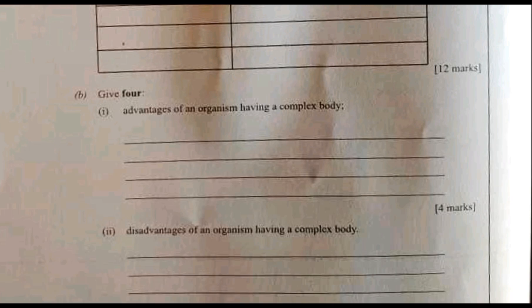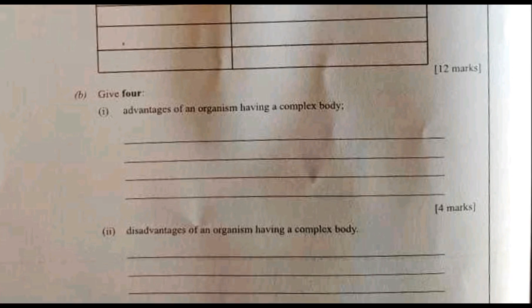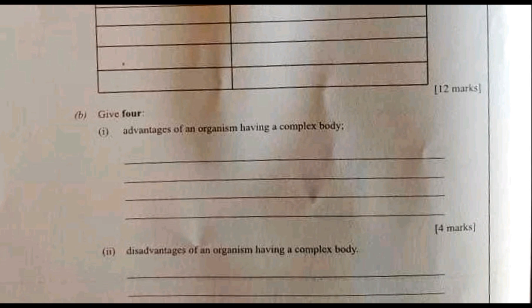Question one b says: give four advantages of an organism having a complex body. When an organism has a complex body, it is able to adapt easily — so adaptability. It is also able to function efficiently since complex bodies enable specialization of cells. There is increased mobility, meaning it can move freely and escape predators. It also has higher cognitive ability — the ability to think, solve problems, and navigate the environment.